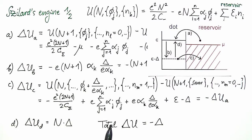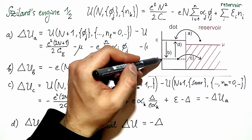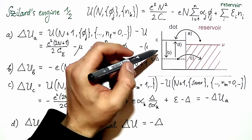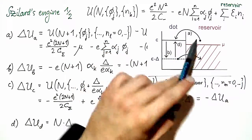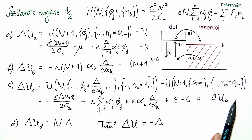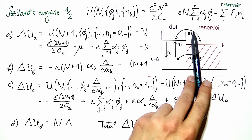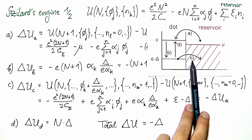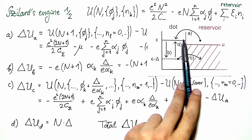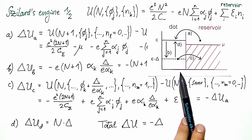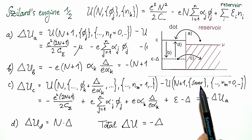The problem is that if delta is very large, we are working with dot levels which are far away from the electrochemical potential of the reservoir. So the probability of measuring the occupancy in step A or C in a way that actually lets us move on to the next step would be very low. This will be discussed in more detail in the second part of this exercise.